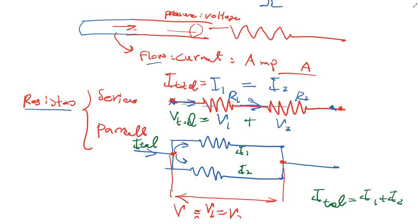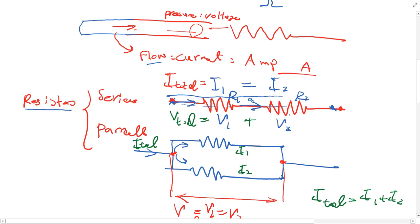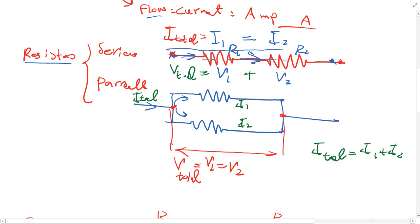In cases where you go in series, you're going to have the same flow, so I total is equal to I1, which is equal to I2. Now what happens to the voltage? The voltage — or pressure difference — in total: the voltage will drop some at the beginning and some at the end. So you can say V total is equal to V1 plus V2.